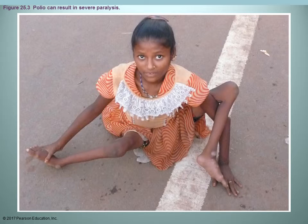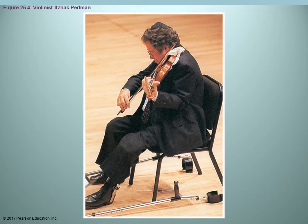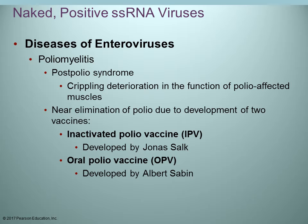Most of you are young enough that you don't remember seeing individuals who suffered from contracting polio. Some people may have had very mild symptoms; others resulted with crippling paralysis. What happens with polio is muscles are affected, leading to crippling effects from paralysis. The number of cases has gone down dramatically since the development of the polio vaccine.